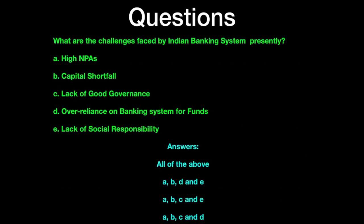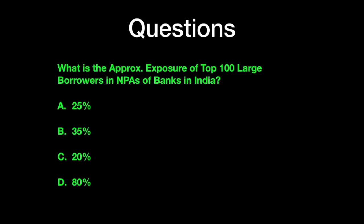The next question is: what are the challenges faced by the Indian banking system presently? Choices include high NPAs, capital shortfall, lack of good governance, over-reliance on the banking system for funds, and lack of social responsibility. The following question asks about the approximate exposure of top 100 large borrowers in NPAs of banks in India — a very factual question of the kind asked by NABARD and RBI, not typically by UPSC.